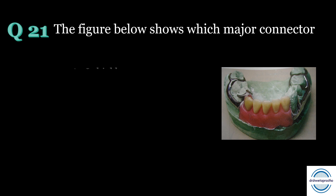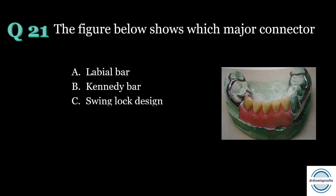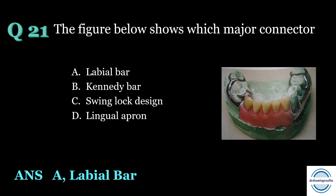Question number twenty-one: the figure below shows which major connector? A. Labial bar, B. Kennedy bar, C. Swing lock design, D. Lingual apron. The answer is A, labial bar. It is a type of major connector placed labial or buccal to the alveolar ridge and teeth. It is mainly indicated in lingual tori or cases of excessively lingually tilted teeth.